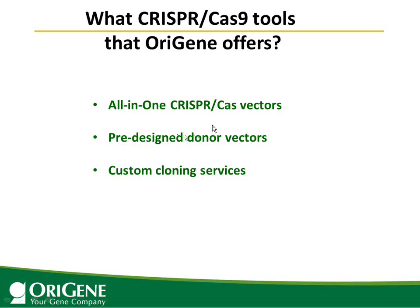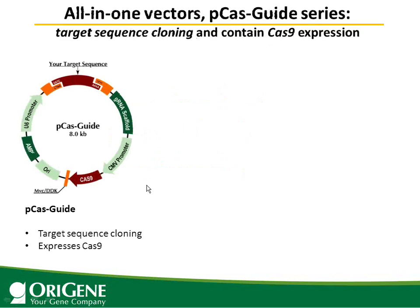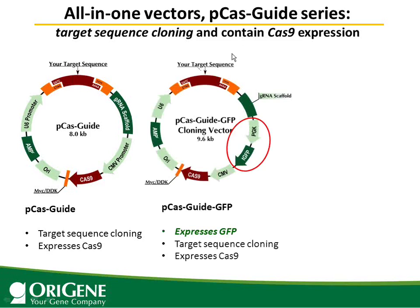We offer all-in-one CRISPR-Cas vectors that express the nuclease Cas9 and allow you to clone your 20 base pair target sequence. We also provide pre-designed donor vectors and custom cloning services. The basic all-in-one vector is pCAS-Guide. In this vector, Cas9 is under the CMV promoter and there are cloning sites for your 20 base pair target sequence. The guide RNA will be expressed under the U6 promoter. After transfection into cells, it leads to sequence-specific double-strand breaks.